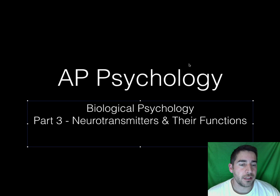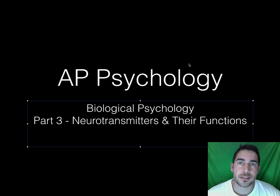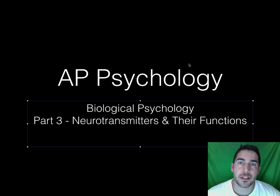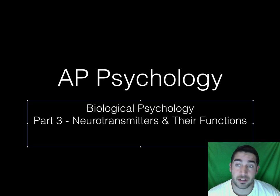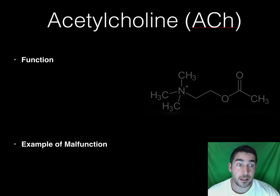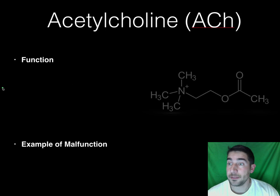Hi, today we're doing part 3: Neurotransmitters and their Functions. We're going to talk about 6 major neurotransmitters — what we need to know about their function and what happens if they don't work right. You've probably heard of some of the things that happen if they don't work correctly. So we'll jump right in and start with acetylcholine.